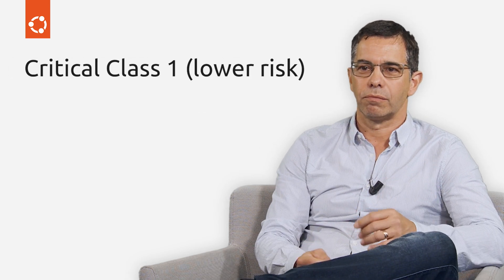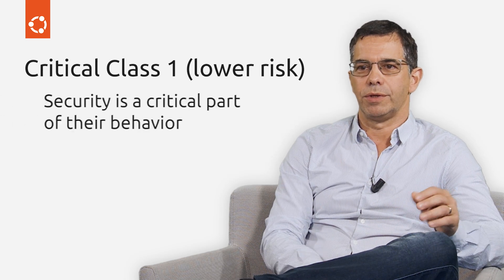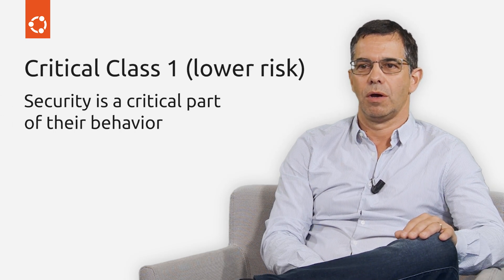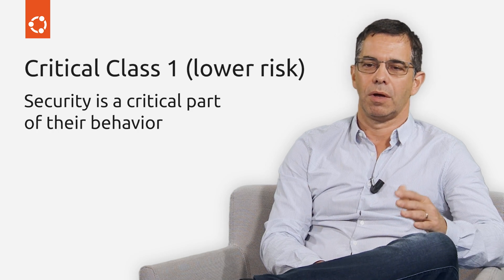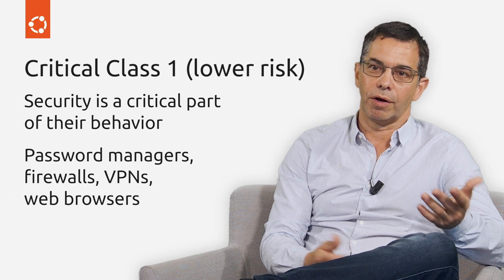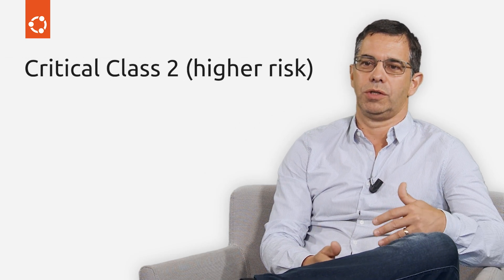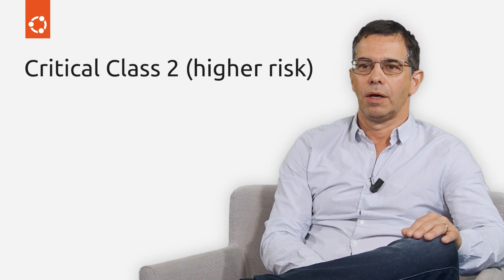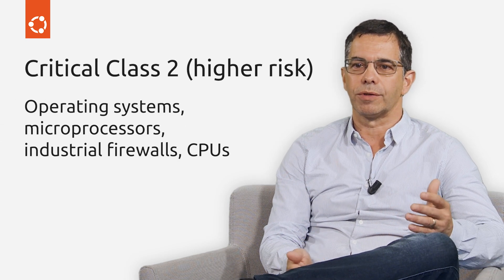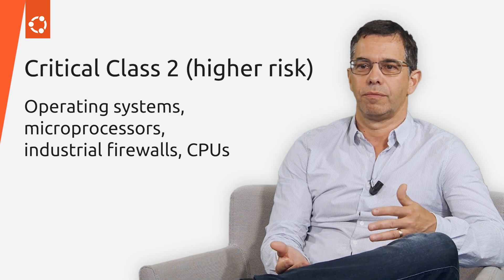Then we have Class 1, lower risk. These are products where security is a critical part of their behavior, such as products with lower-level access — password managers, firewalls, VPNs, or even web browsers. And then we have Class 2, which is higher risk. These are products like operating systems, microprocessors, industrial firewalls, or even CPUs.